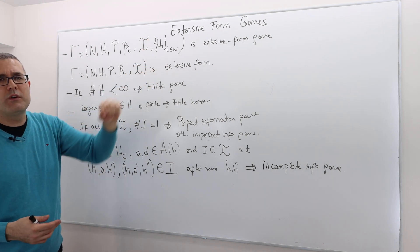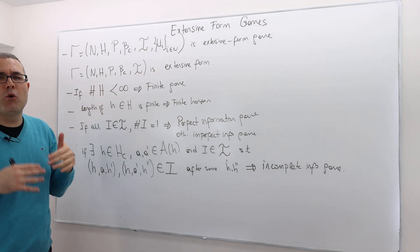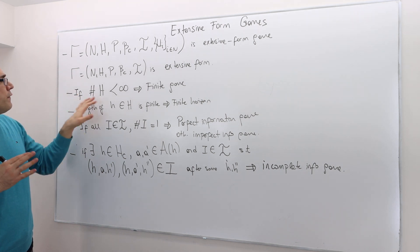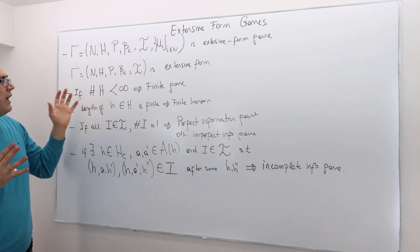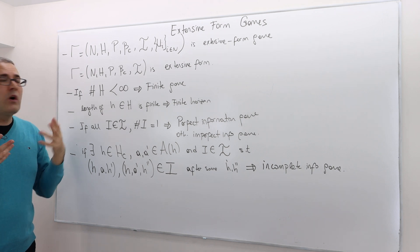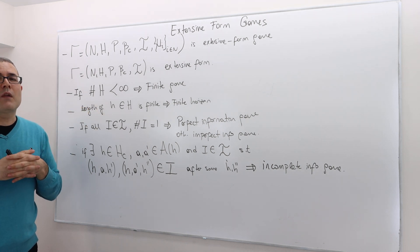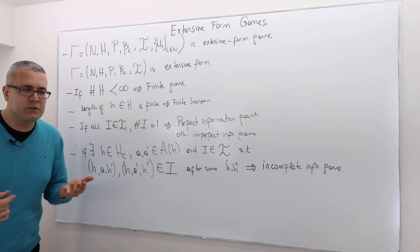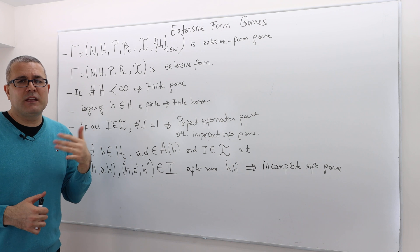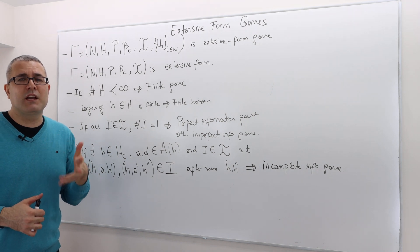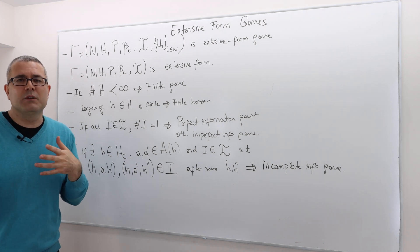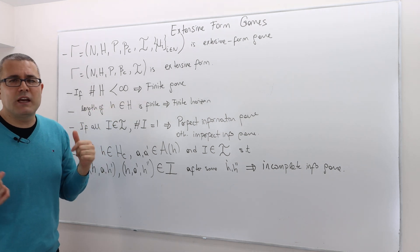Once we ignore the payoff functions, the remaining structure is called the extensive form. If the number of histories in this game is finite, then the game is finite. The number of histories is finite if the number of available actions for each player is finite, because histories are combinations of available actions. For that reason, we call it a finite game.